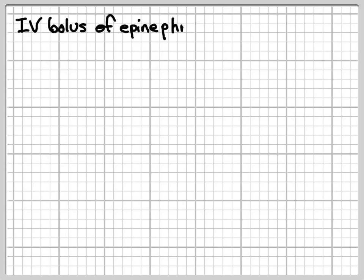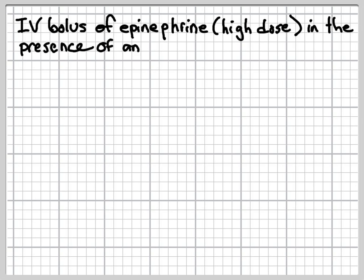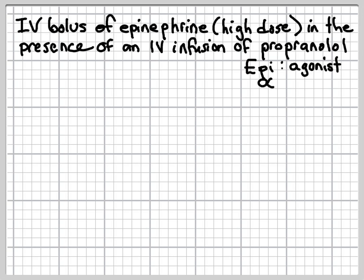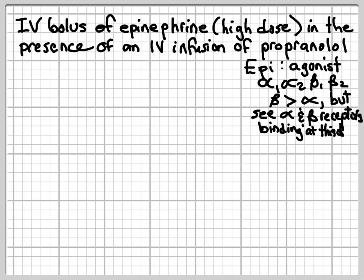In this example, we're going to give an IV bolus of high-dose epinephrine in the presence of an IV infusion of propranolol. Remember that epinephrine is an agonist of alpha-1, alpha-2, beta-1, and beta-2 adrenoceptors with greater beta activity than alpha activity. But at this high dose, we will see both alpha and beta receptors having effects.